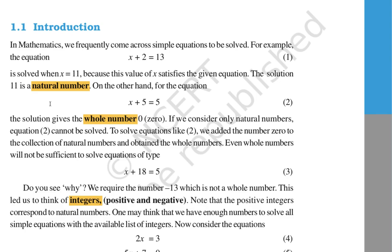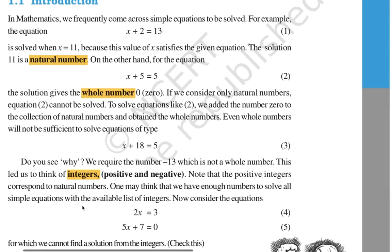What are whole numbers? Whole numbers means if in the counting numbers — that is 1, 2, 3 and so on — if we include zero, then that is called a whole number. So zero along with natural numbers is called as whole numbers. Now what about integers? When we consider whole numbers as well as negative numbers, this complete set is called integers.